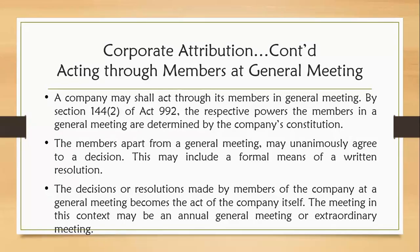The company may act through members at the general meeting. Section 144(2) provides that the respective powers of members in general meeting are determined by the company's constitution. What the members can do in the general meeting — and the general meeting is the highest decision-making body — matters reserved for members in general meeting which cannot be dealt with by the board of directors or any other person are delineated in the constitution of the company. The members, apart from the general meeting, may also unanimously agree to a decision by a formal means of a written resolution.